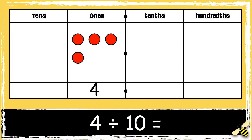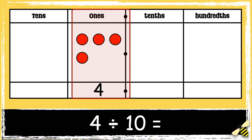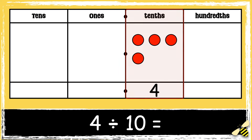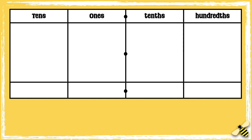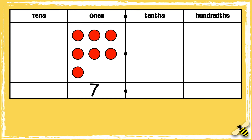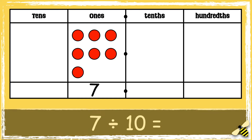When we divide a number by ten, we move the digits one place to the right. So four ones becomes four tenths. We need to use zero as a placeholder to show that there are no ones, so the answer is 0.4.